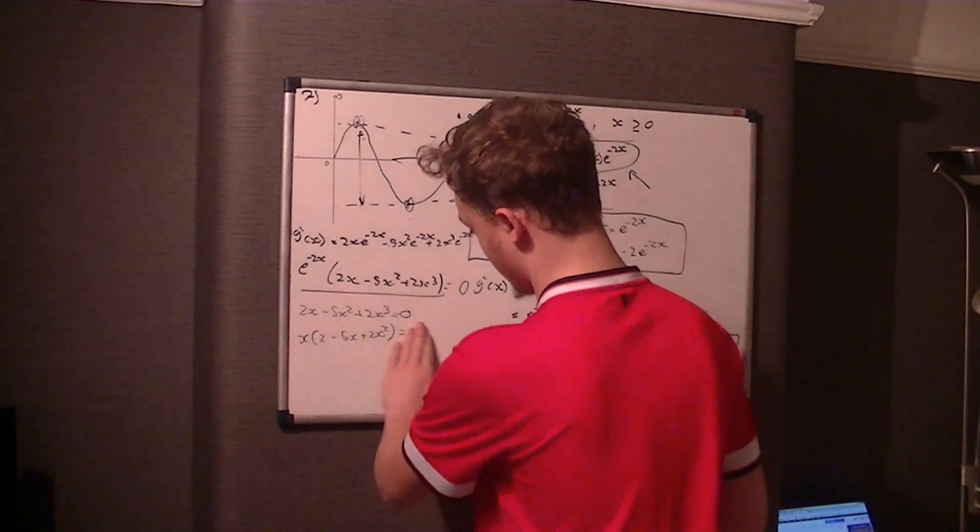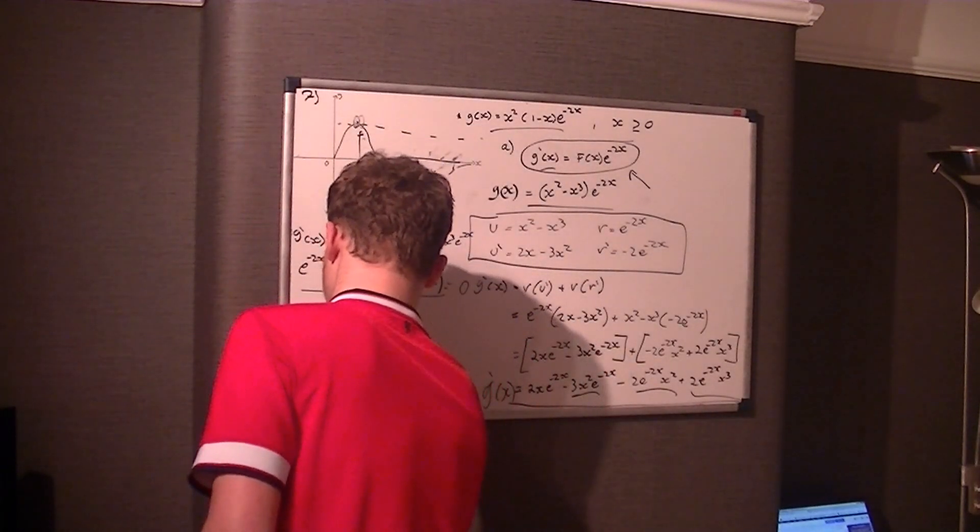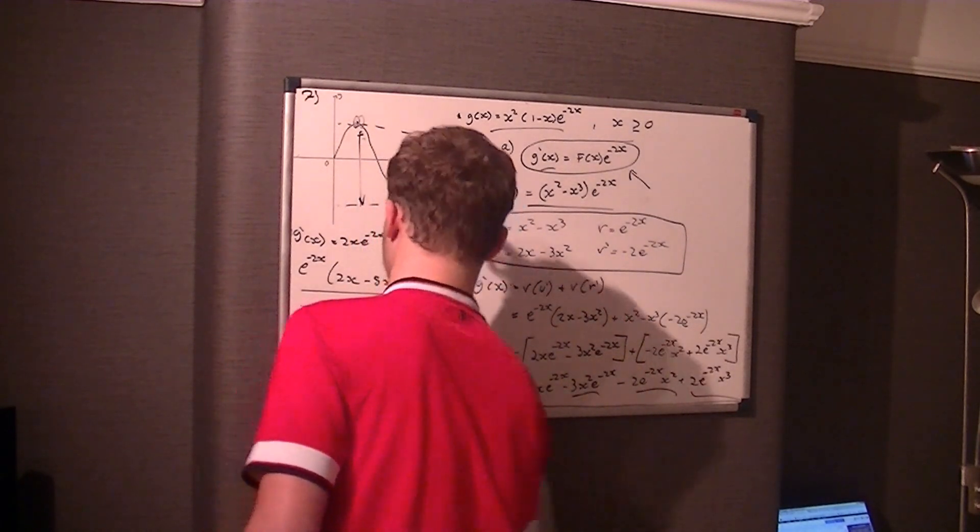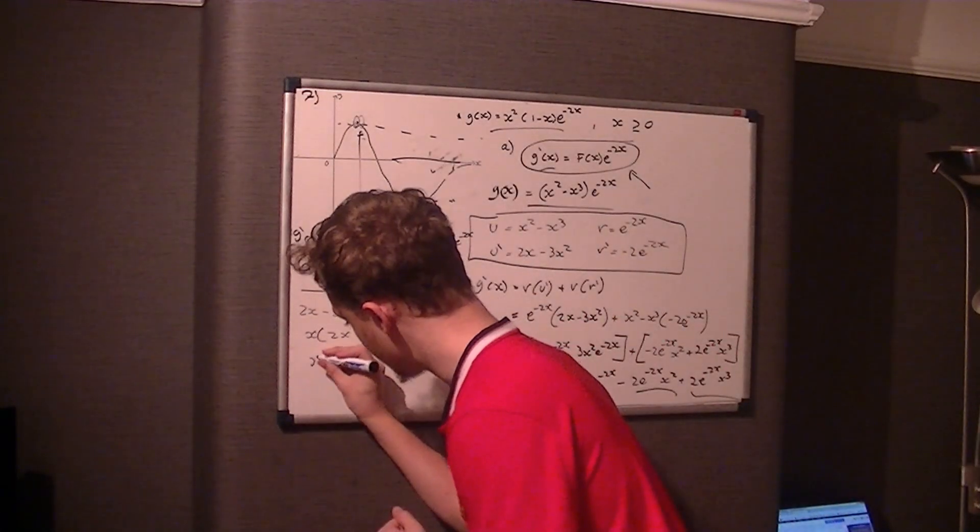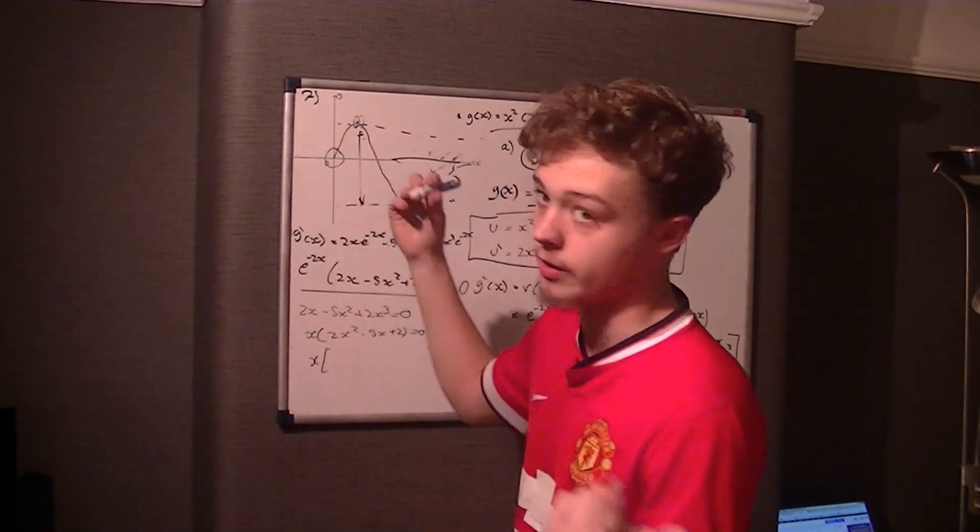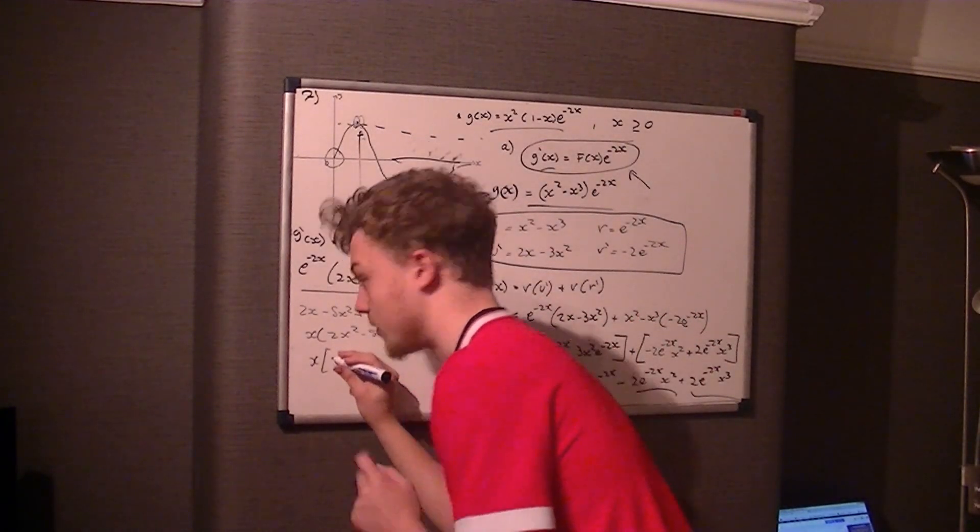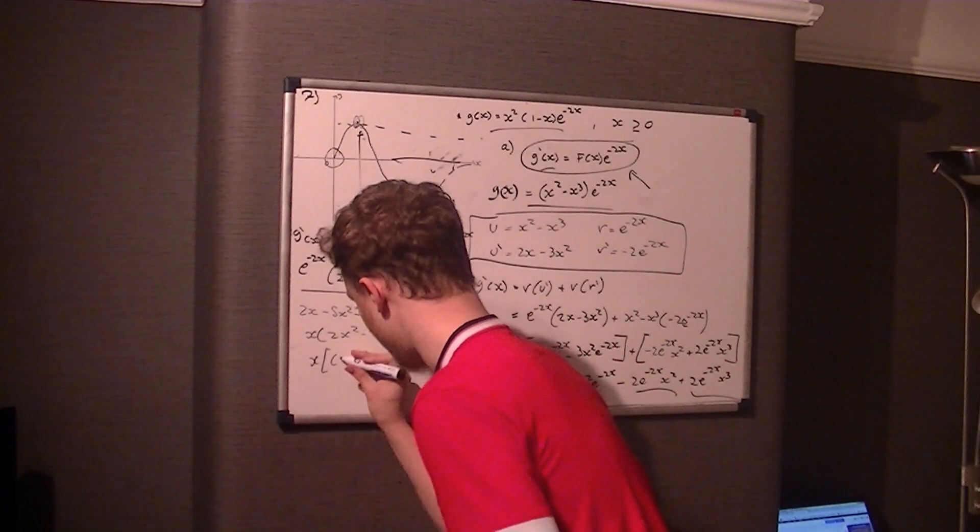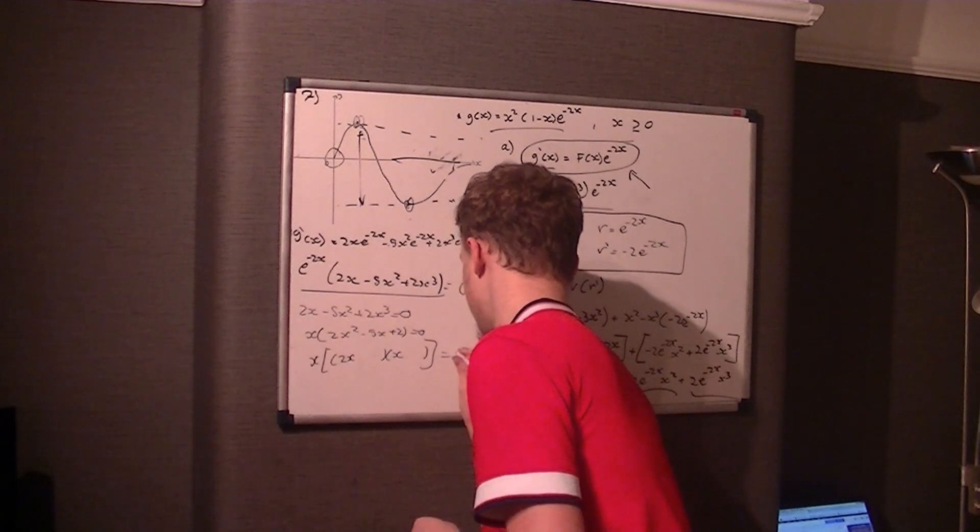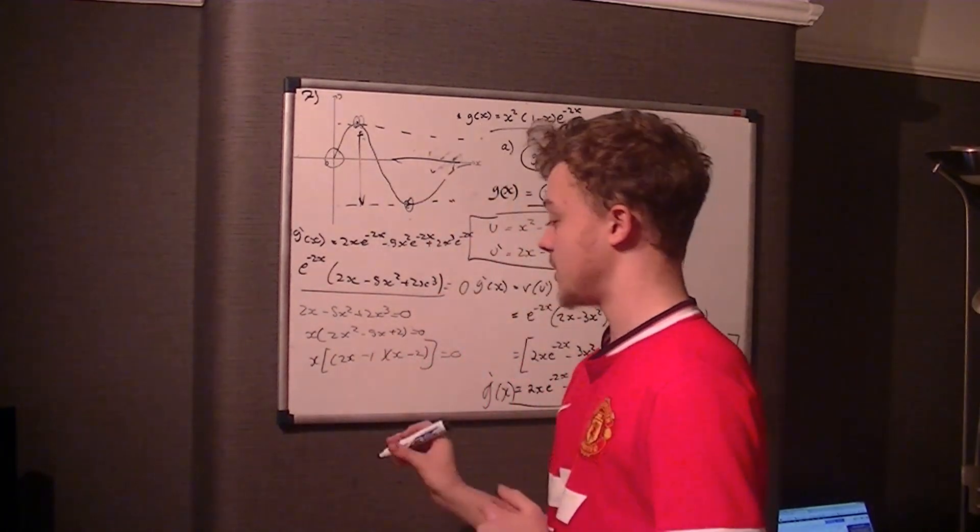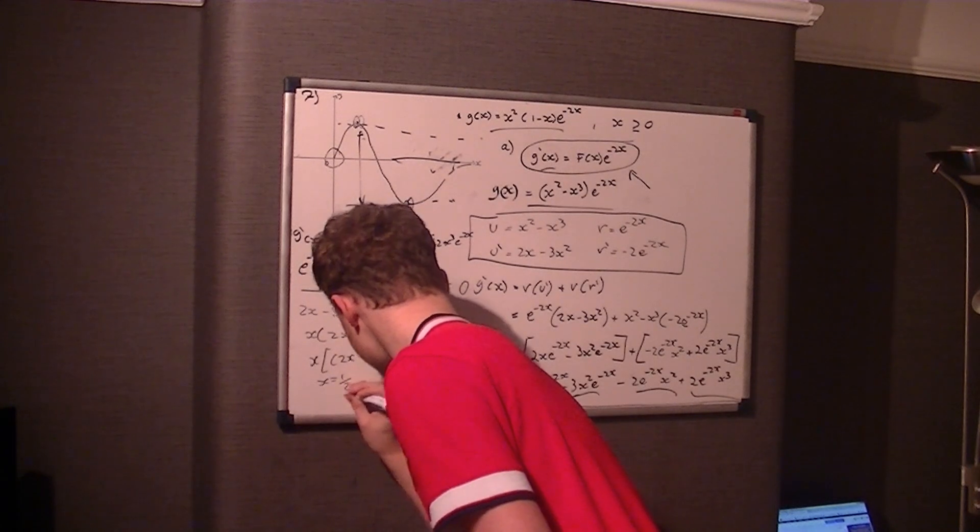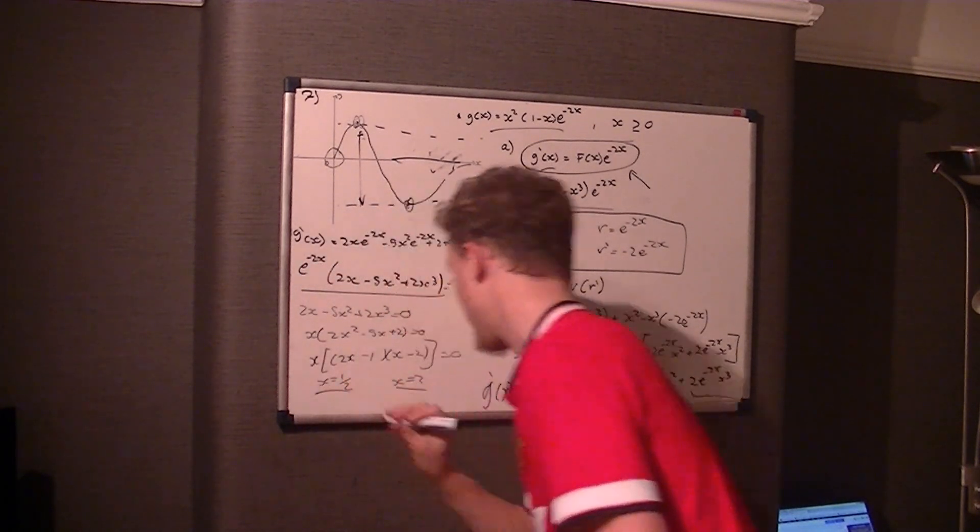So all we're solving now is a quadratic and we simply factorize. We're not really bothered about this other x because that's going to be zero and we already knew that, but that's not a turning point. So we take out 2x in one bracket, x in another bracket. You've got negative 2 and negative 1. So therefore x is either a half or x is 2. So we've got x is a half and x is 2. x is a half is obviously going to be this one and x equals 2 is obviously going to be that one.